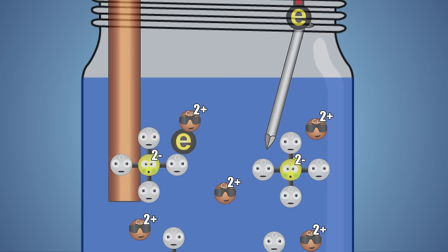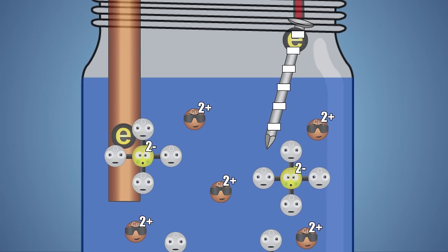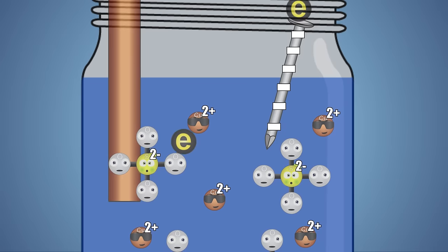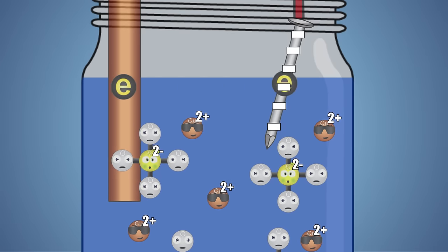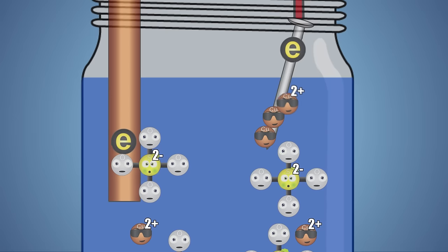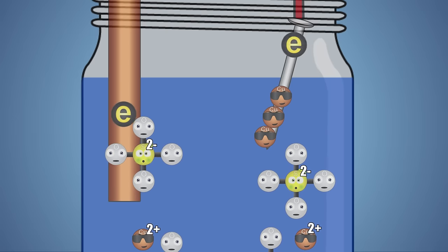As the electrons travel the circuit, they build up in the nail cathode and it becomes negatively charged. This negative charge attracts the positively charged copper ions that are floating in the solution, causing them to deionize and attach to the nail cathode, coating it in a thin layer of copper.